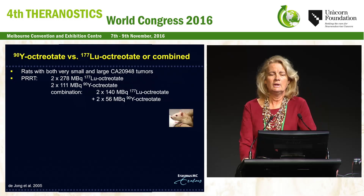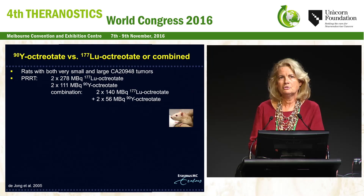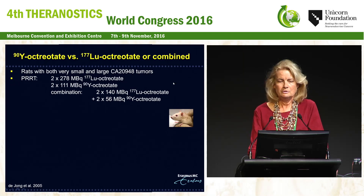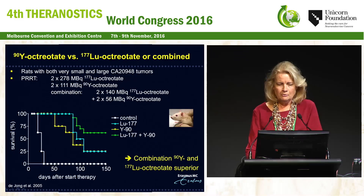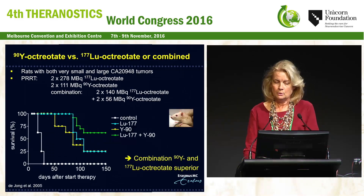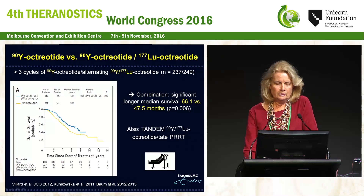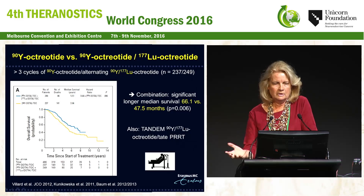We tested this in rats bearing both very small and large tumors, comparing yttrium-90 octreotate versus lutetium octreotate at doses delivering the same radiation dose in gray, and also a combination of 50% of both. Animals receiving the combination, shown in the green survival curve line, had better survival than those receiving only yttrium-90 or lutetium-labeled octreotate. The combination was superior, and it was great to see that clinical studies also confirmed a significantly longer median survival with the combination compared to only yttrium-labeled octreotate. Tandem therapy — alternating forms of yttrium and lutetium-labeled peptides — is also being performed.